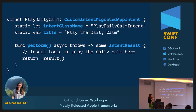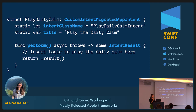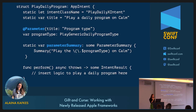Here is a pared-down example of an App Intent that does one and only one thing: play the Daily Calm — Calm's most iconic daily meditation. I've highlighted the key players of this App Intent in light blue. CustomIntentMigratedAppIntent is a long-worded protocol that inherits from the basic App Intent protocol and conveys to the system that this App Intent has been migrated from a prior SiriKit intent. IntentClassName is the unique identifier for this App Intent, whereas title contains the string for the App Intent.